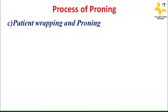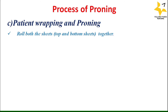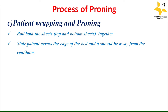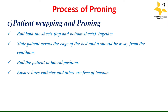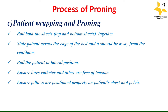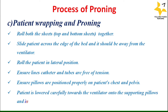Place a flat sheet on top of the pillows and patient with neck exposed. For patient wrapping and proning, roll both the top and bottom sheets together — this is done by staff at the side of the patient. The respiratory therapist and doctor at the head end protect the head and ET tubings. Slide the patient across the edge of the bed away from the ventilator, roll the patient into lateral position, and ensure lines, catheters, and tubes are free of tension.